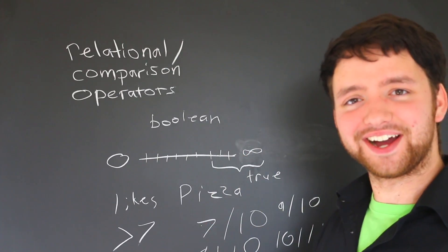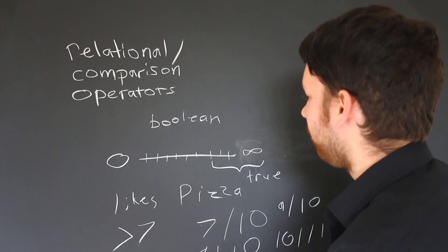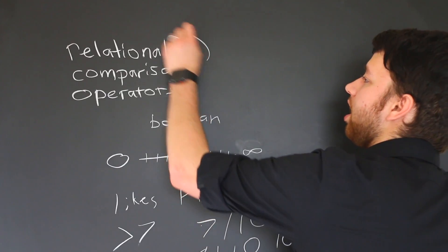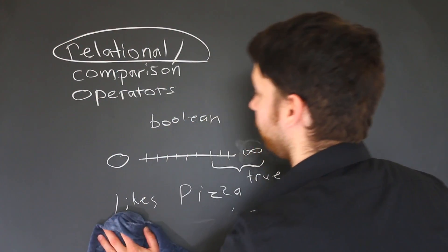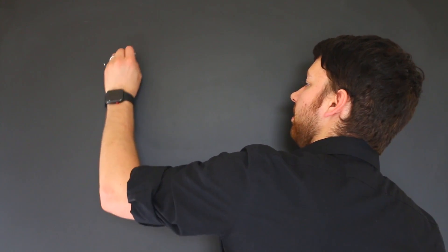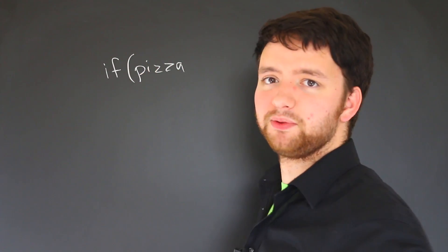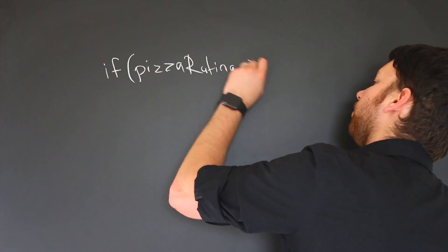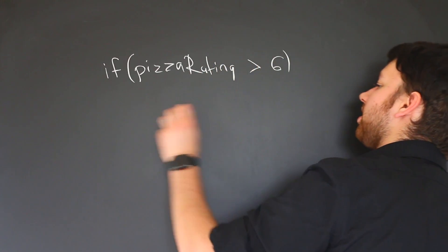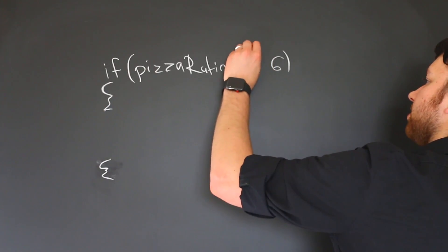Well, in order to do this we need these relational operators, and it's really simple, so it's not too complicated, don't worry. To write this out it's going to look something like this: we're going to say if, and then we'll just make some variable name pizzaRating I guess, and if that's greater than the value six we want this code block to execute. So this here is the operator.